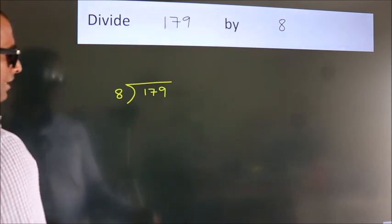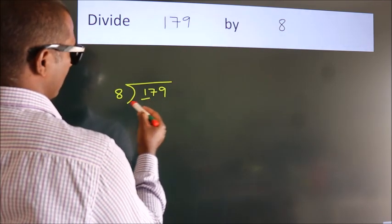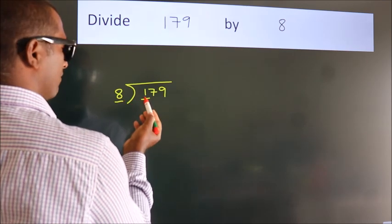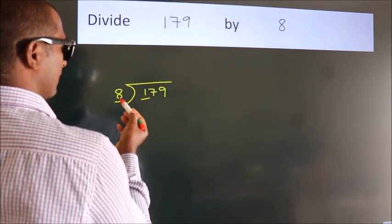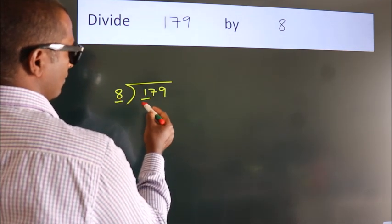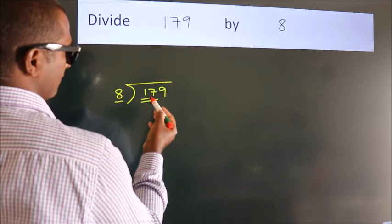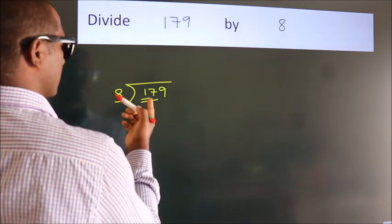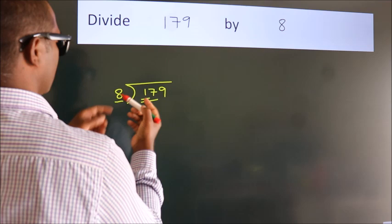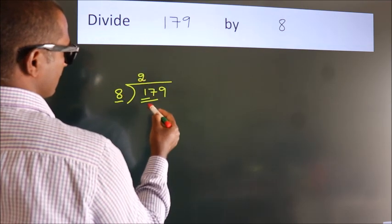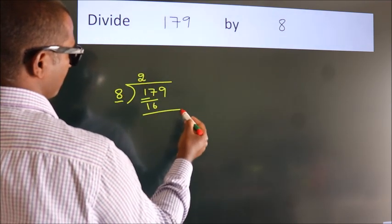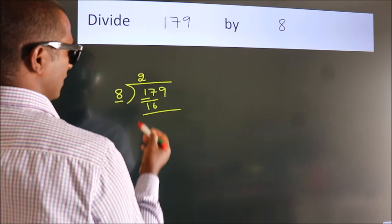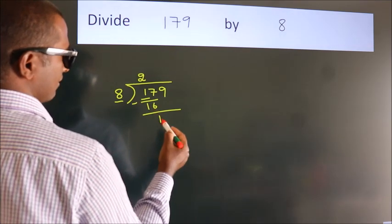Next, here we have 1, here 8. 1 is smaller than 8, so we should take two numbers, 17. A number close to 17 in the 8 table is 8 twos, 16. Now we should subtract, we get 1.